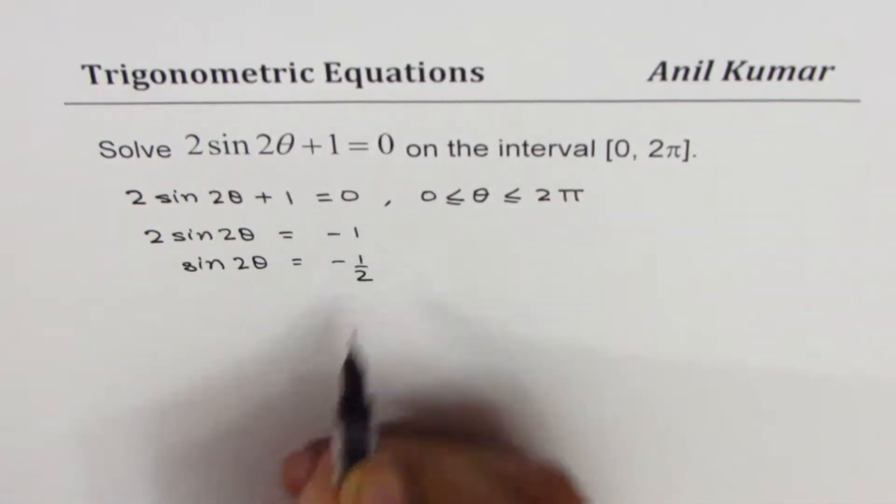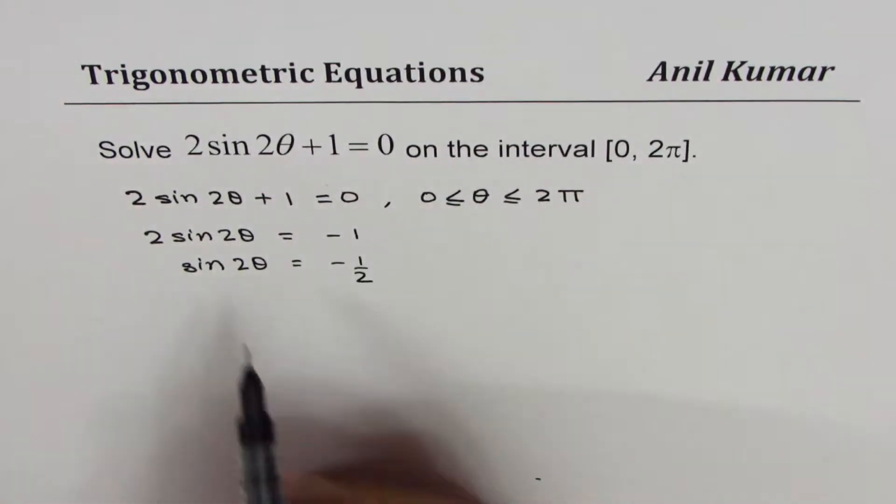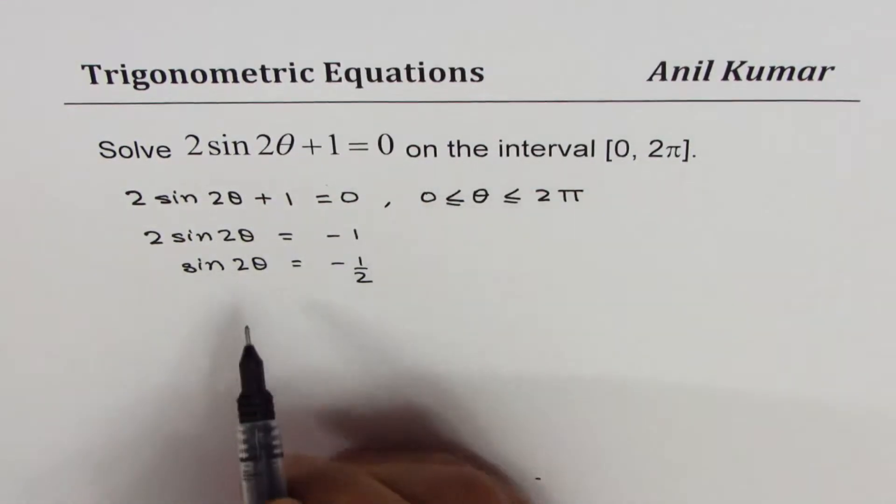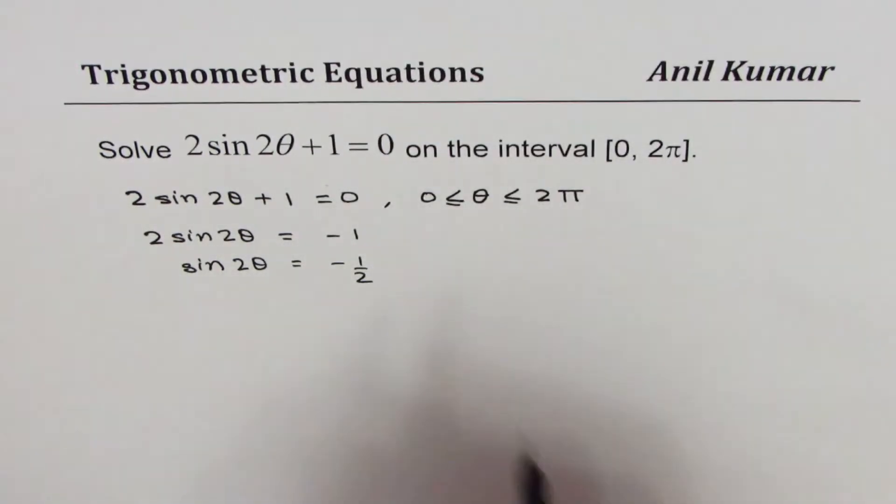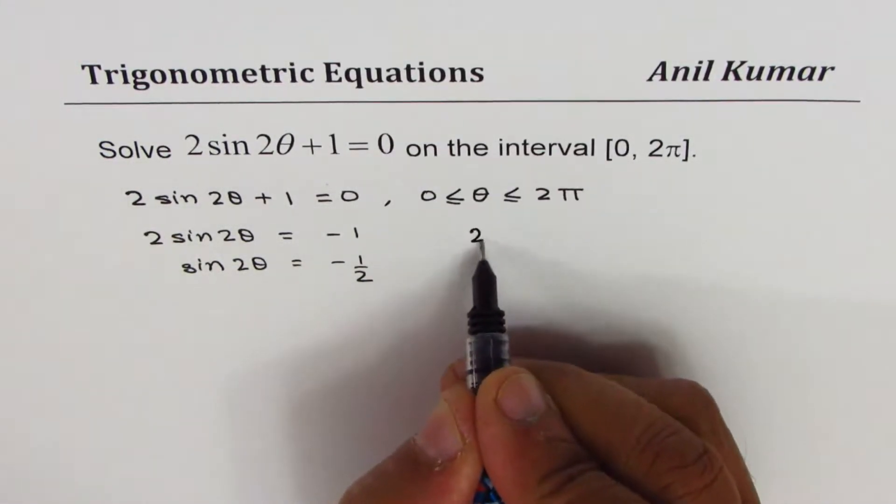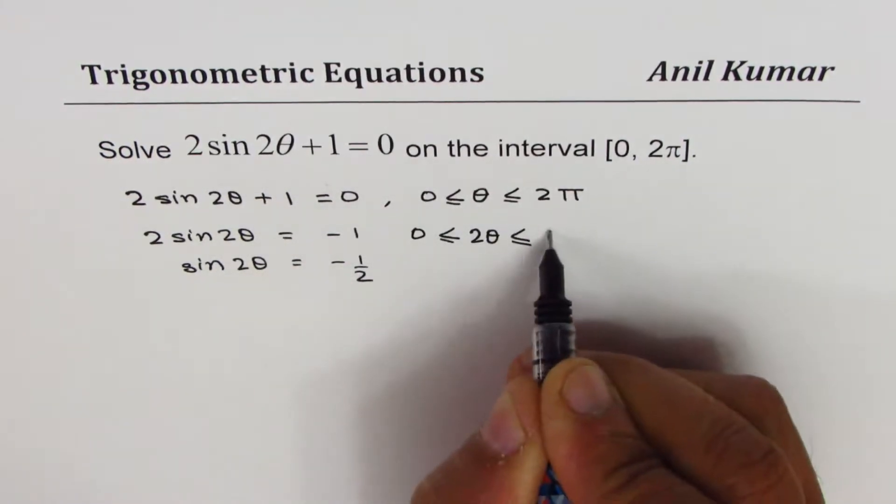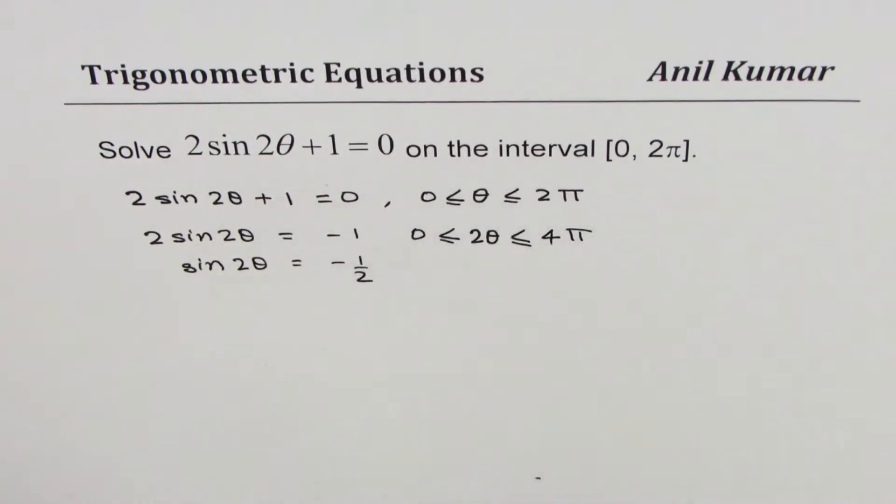Rearranging, we get 2 sin 2θ = -1, so sin 2θ = -1/2. Now if θ is within 0 to 2π, what should be the domain for 2θ? Let's multiply this by 2, so we get 2θ will be multiplying everything by 2, 0 to 4π.